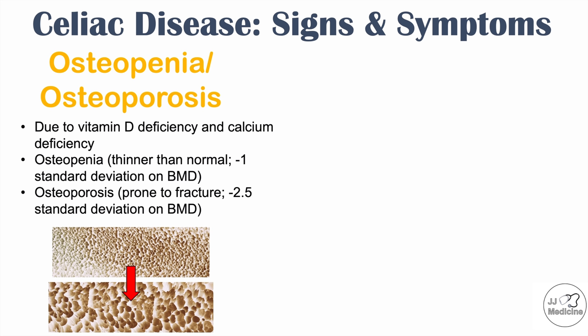Hormonal issues can also occur. In females, this manifests as delayed menarche in younger patients, secondary amenorrhea — where a patient stops having periods for at least six months after previously having them — and infertility. In males, celiac disease can cause impotence and also issues with infertility.